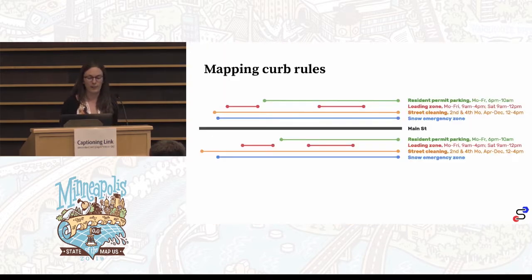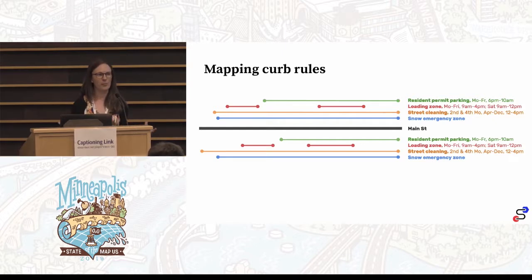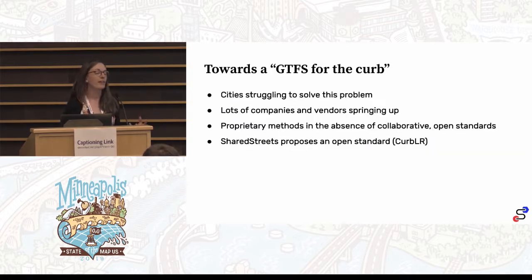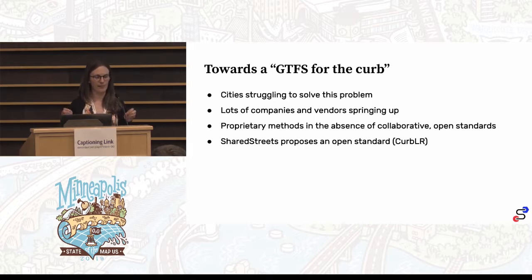It turns out this is a really difficult problem. When we talk about curb regulations, there's not a one-to-one relationship with physical space. Your average street has up to four regulations on each side, each with a start and end place. We're mapping a legal regulation — a temporal restriction about who can do what, where, at what time. The regulations themselves are complicated enough, but the location is actually the really hard part. A ton of cities across the country are struggling with this problem and each doing it in their own way. There's been no standard way to collect or store this data. Some cities like DC are using computer visioning; others like Eugene, Oregon, have an intern who walks the streets with a notebook.